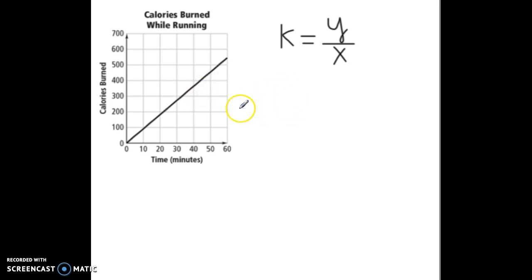Now let's see what is that constant of proportionality. We take a point. We're going to take this point right here. And that point is 10, 100. So what's the y coordinate? Well, the y coordinate is 100. And then the x coordinate is 10. So we do 100 divided by 10 and we get k equals 10.